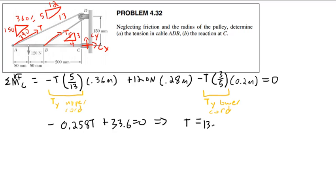Working through the math: negative 0.258T plus 33.6 equals 0, which leads to T equals 130 newtons exactly. That's the tension in both cables — it's one continuous cable over a pulley, so the tension is equal on both sides. If there were pulley friction, the forces would differ slightly, but we're told to ignore that.